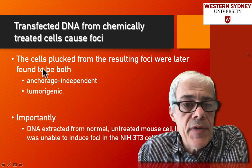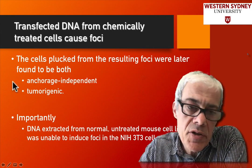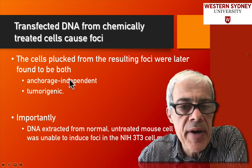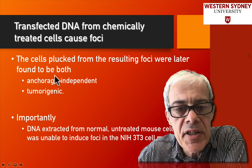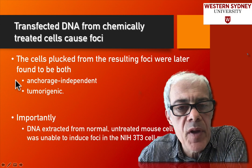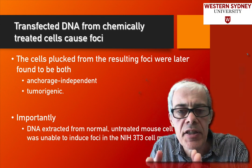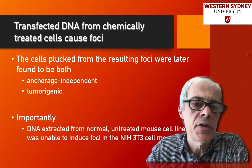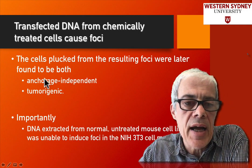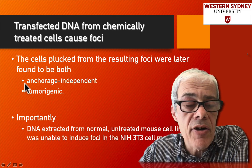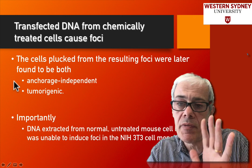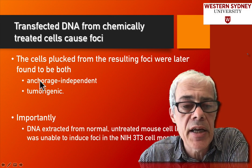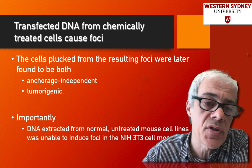When you look at these foci, because the cells are growing up from the dish, you can see them growing differently to the cells around them — they've lost their anchorage dependence. We talked about anchorage dependence last week in the context of metastasis, where cells had to break away from their neighbours. Typically, cells are anchored to each other and neighbouring cells limit each other's growth through signalling. But these foci are clearly overgrowing and growing on top of each other, having lost these characteristics.